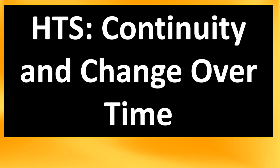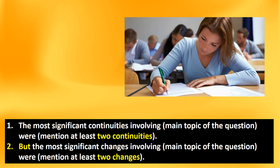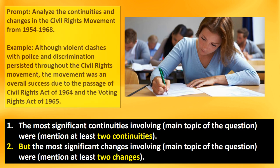Last historical thinking skill: continuity and change over time. One of the easiest things for students is to talk about what changed over time, but a lot of students tend to forget to talk about what stayed the same throughout time. Essentially you're trying to determine what is more significant — the continuities of a topic or era, or the changes over time. The most significant continuities might be these two things; however, the more significant changes involving World War I and World War II were at least these two things. You can see the argumentation part of it as well.